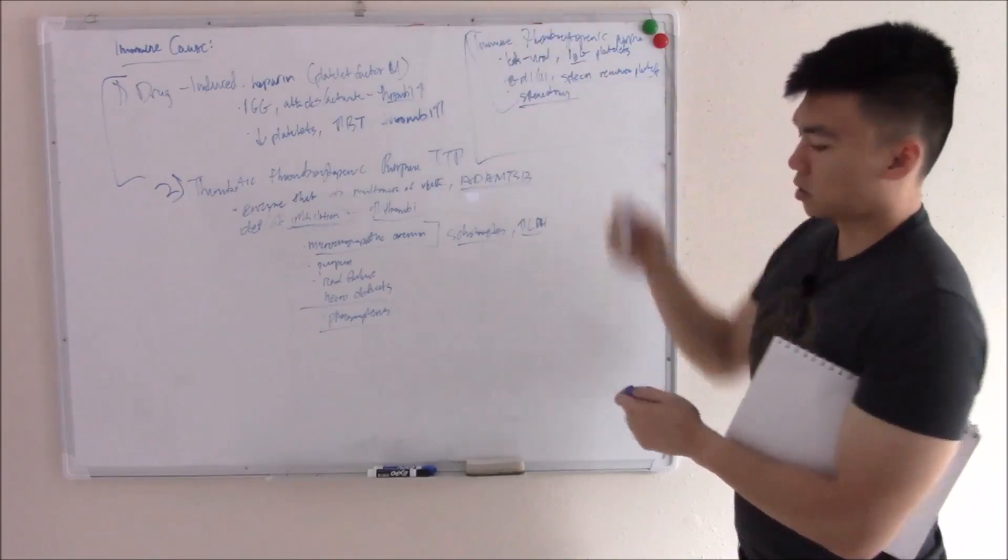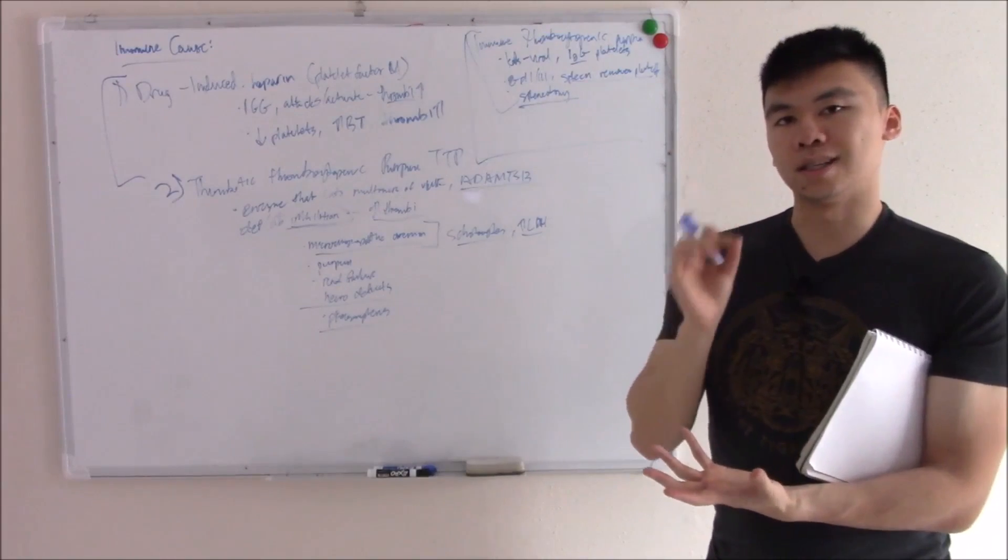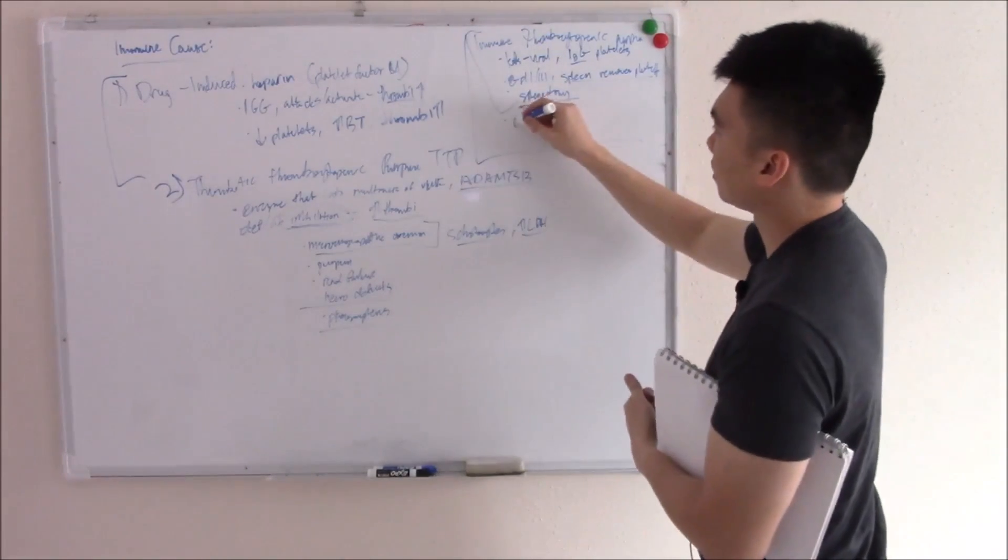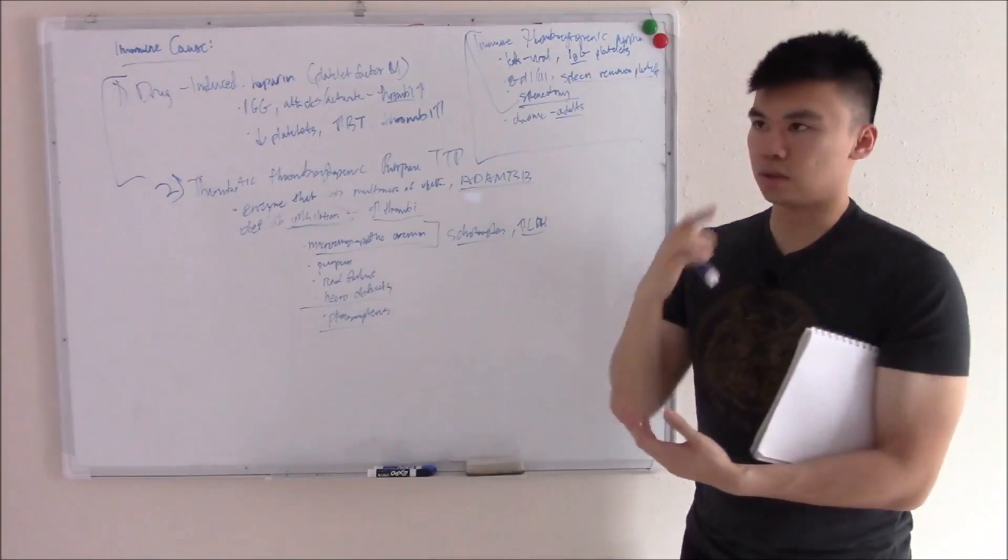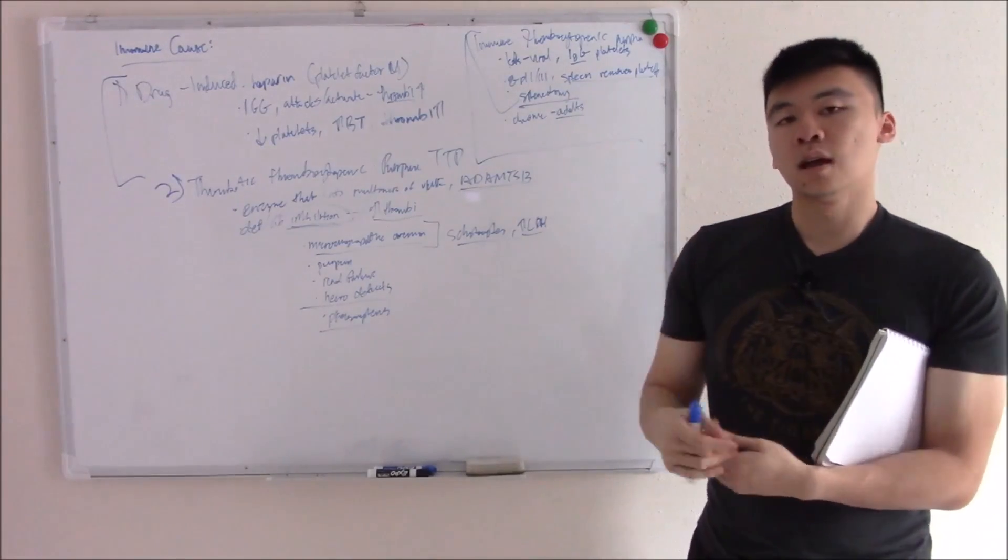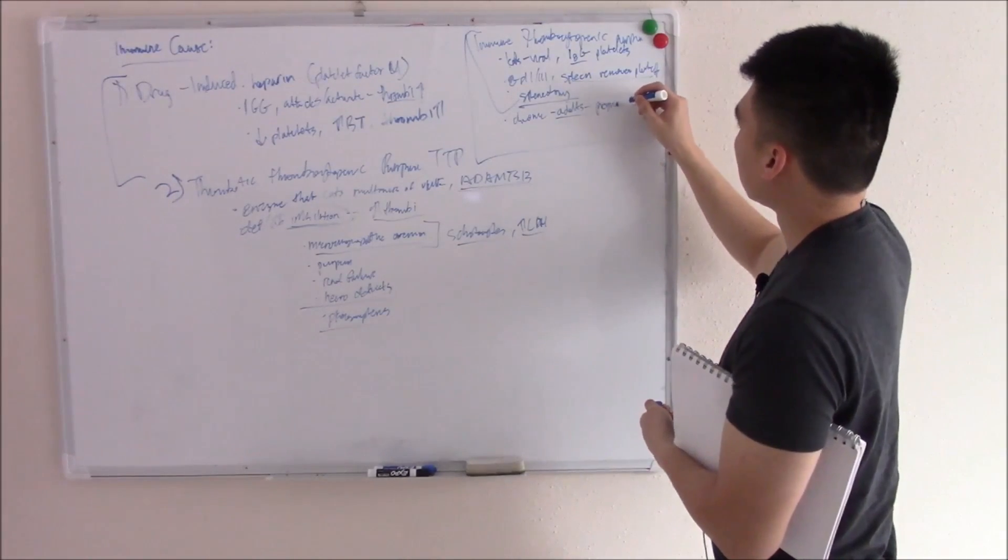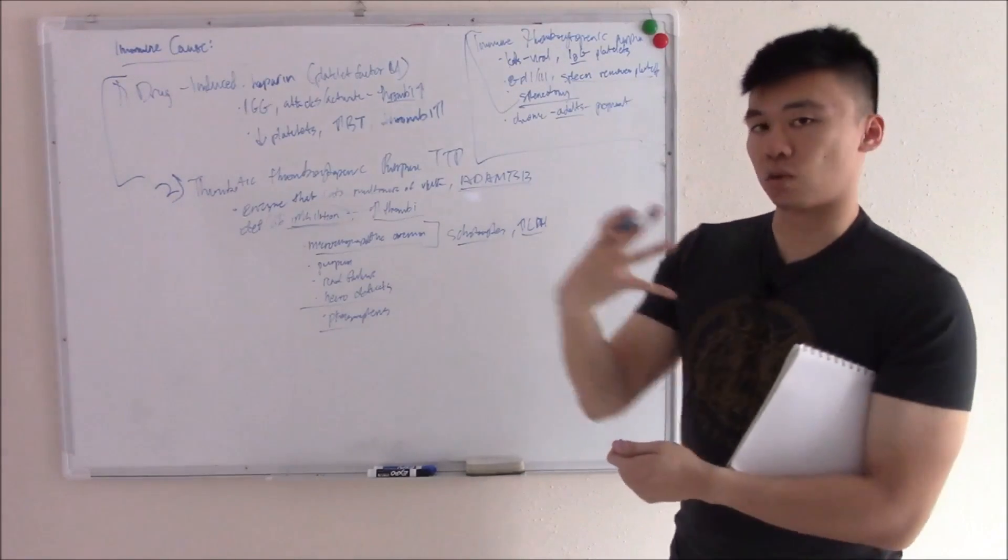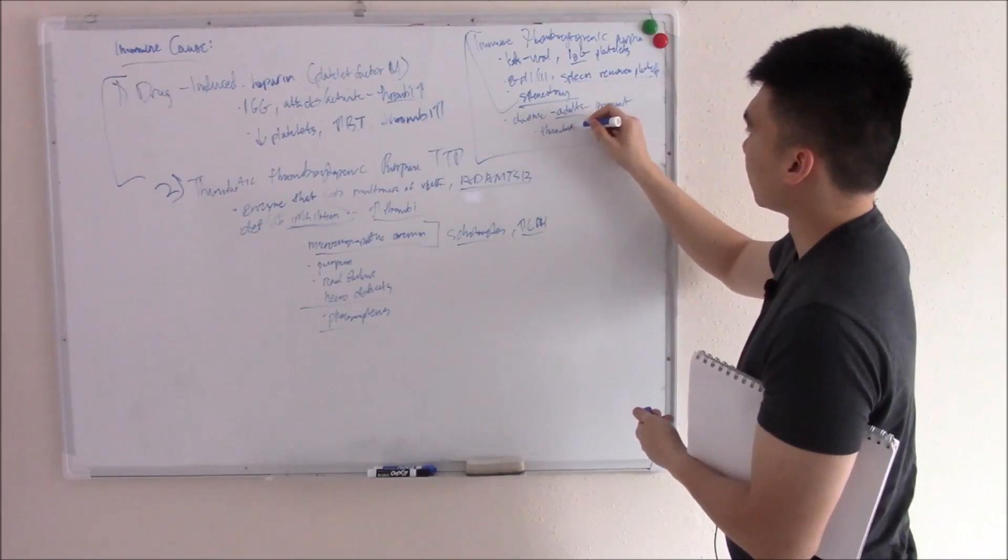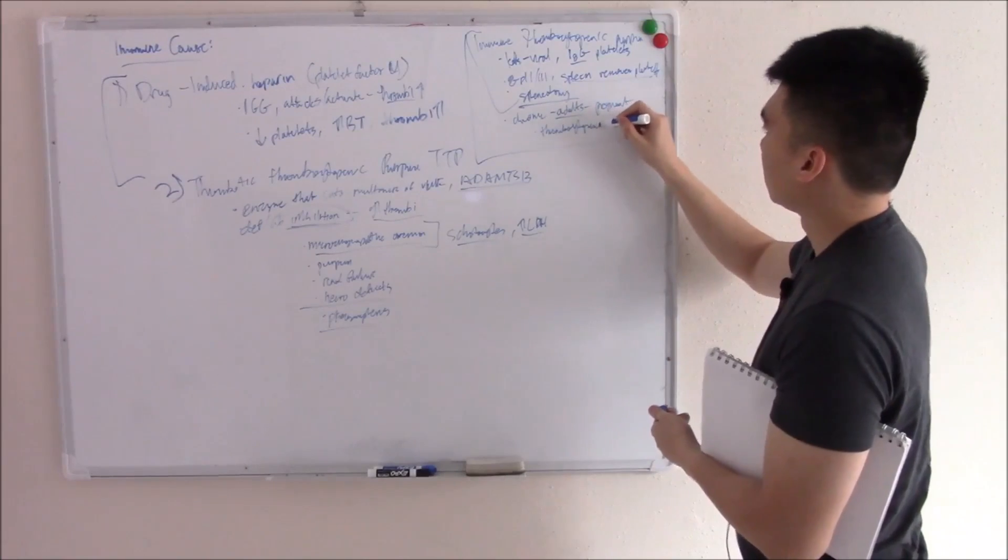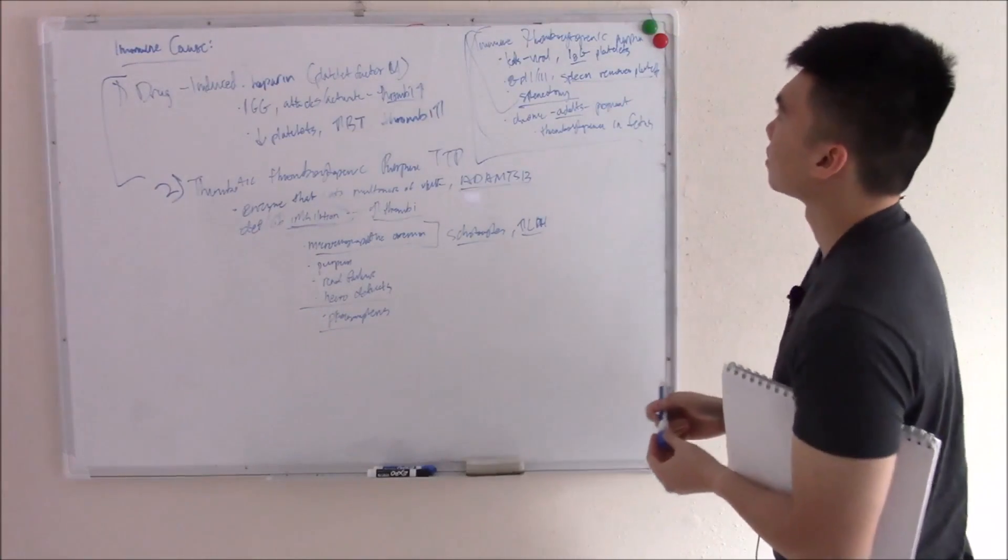Usually acute, usually self-limited, usually in kids. If it's chronic, it's usually seen in adults. So chronic, seen in adults. And with most autoimmune diseases, more seen in women. And if that lady gets pregnant, then that antibody, because it's IgG, can cross the placenta. It causes thrombocytopenia in the kid. Or the fetus. Thrombocytopenia in fetus. That's immune thrombocytopenia.